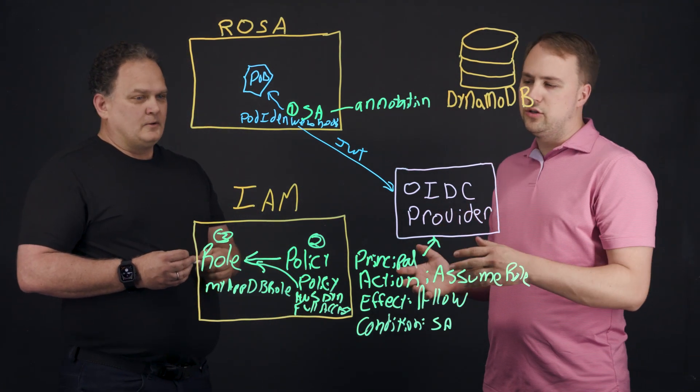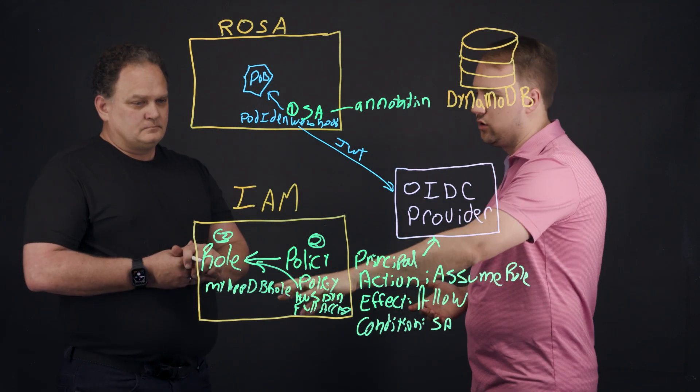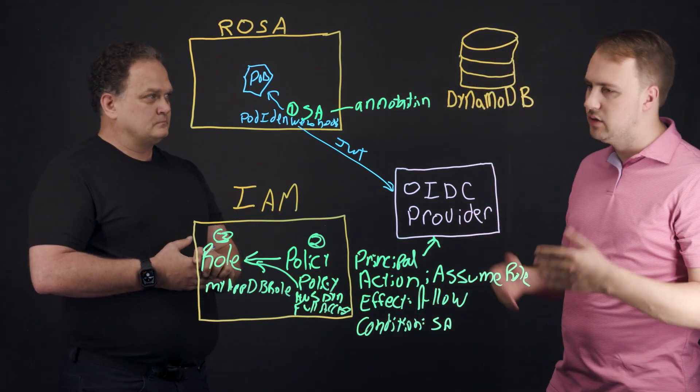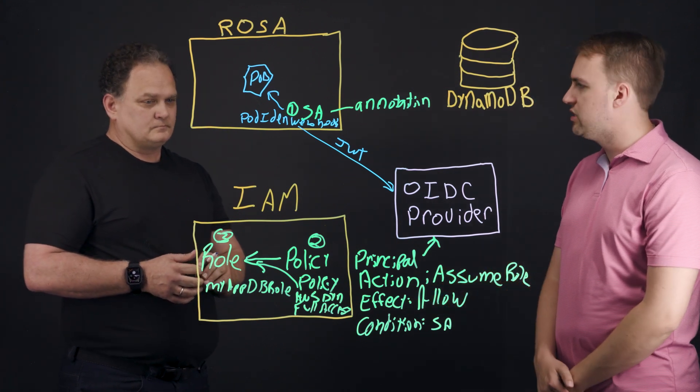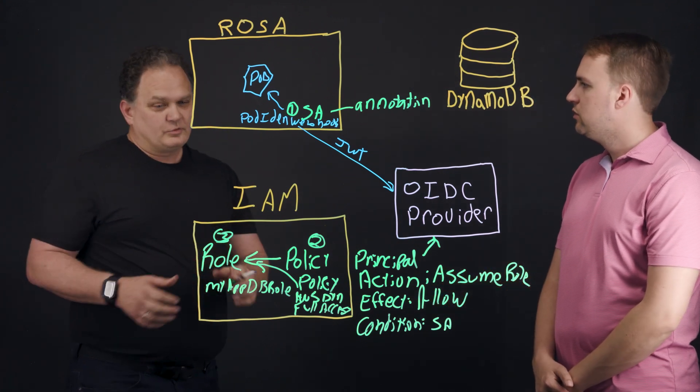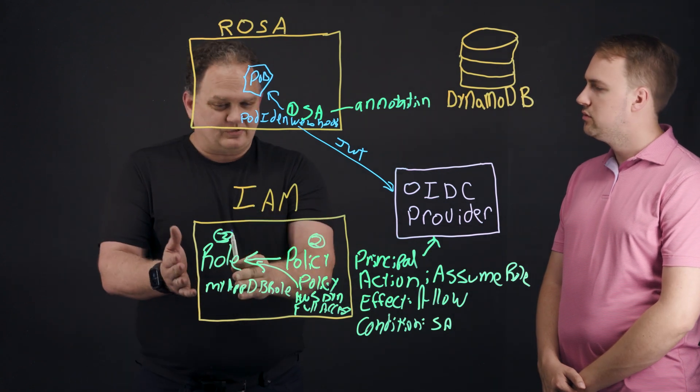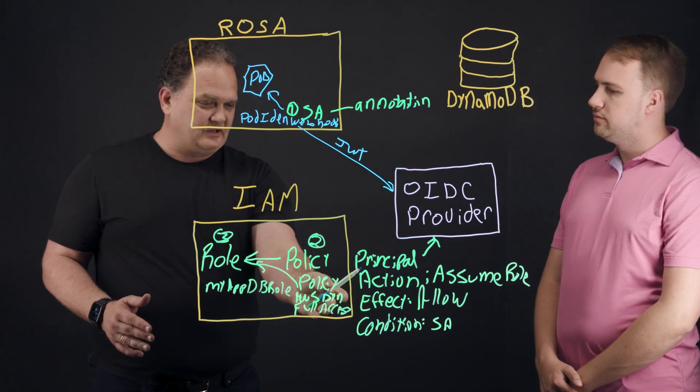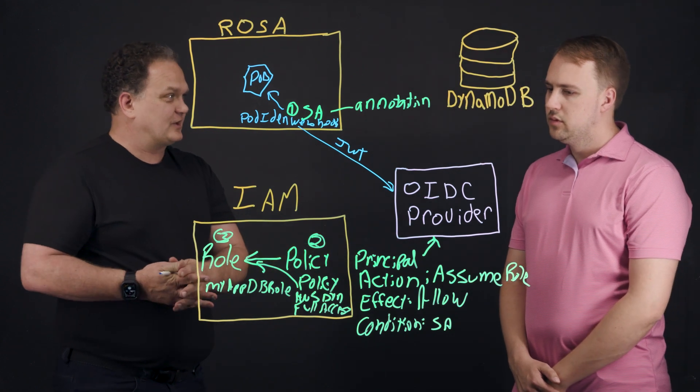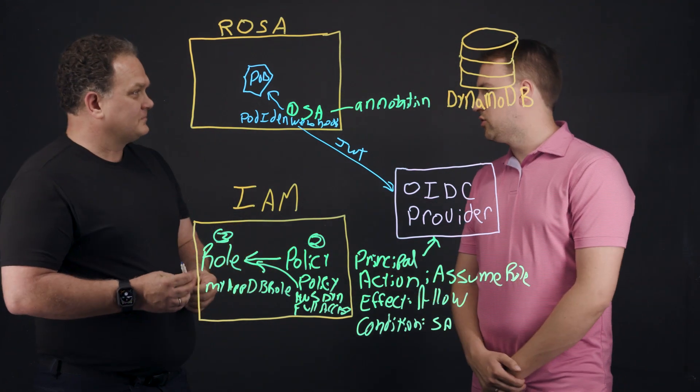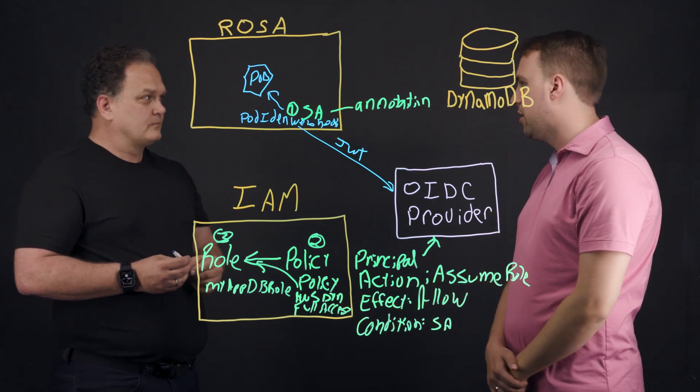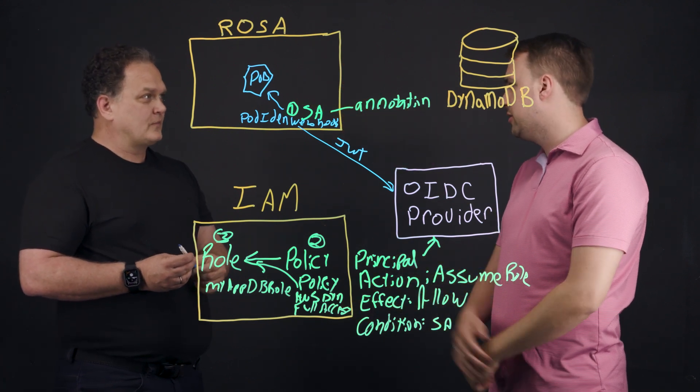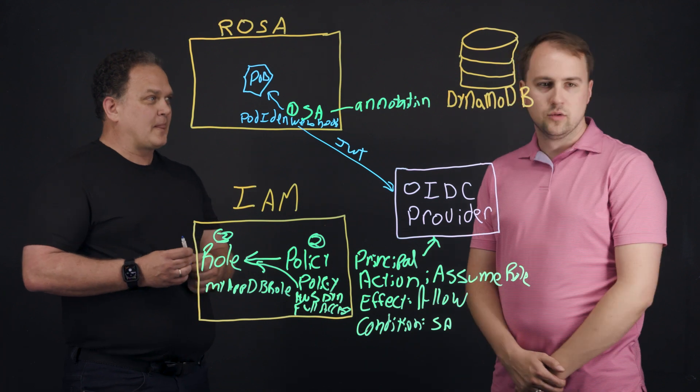how do you go about changing the permissions of this role? So I don't want to give it full access. AWS says I need to have least privilege. What do I do to reduce the scope of that role? You simply would change this role. So you can remove the full access policy. You could do something like read-only, as an example. Oh, that seems a lot easier to just reduce policy. So there's nothing else I have to change here. I just simply change the policy at AWS, and then it changes the permission. That's right. Awesome. That's great.